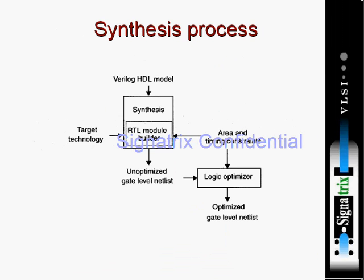Let's look at what exactly a synthesis process is. From the model shown here, we have inputs going into the synthesis — a very long HDL model which goes as input to the synthesis. This model consists of synthesis and then the RTL module builder, where the inputs are the HDL model, the target technology, and the area and timing constraints. Combining all these things, we get an unoptimized gate-level netlist, which goes as input to the logical optimizer, and ultimately the result is an optimized gate-level netlist.